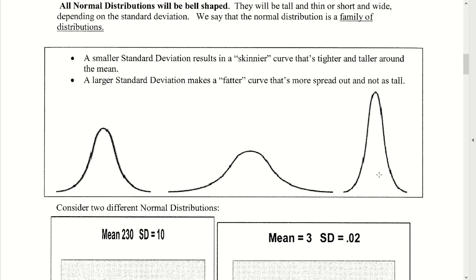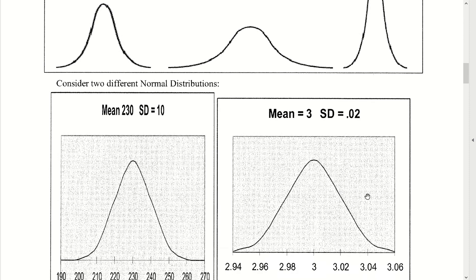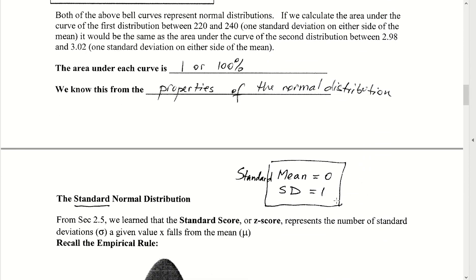As we move through this chapter, whenever we say normal distribution, your mind should immediately ask: what is its mean and what is its standard deviation? We also want to remember that the area under the curve equals 1, or 100%.